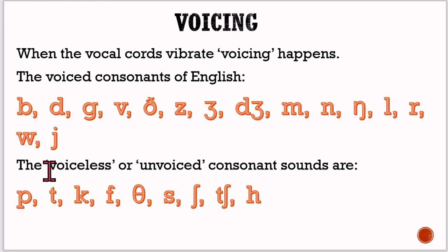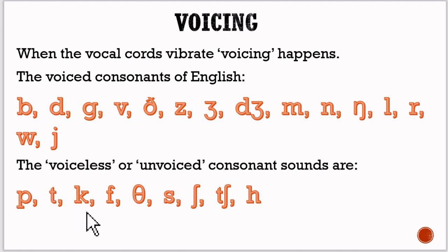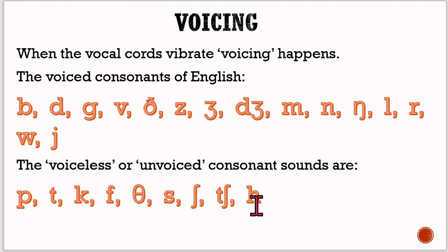And the voiceless or unvoiced consonant sounds in English are P, T, K, F, the voiceless th, S, SH, CH, and H. That is classifying consonants according to whether they are voiced or not voiced.